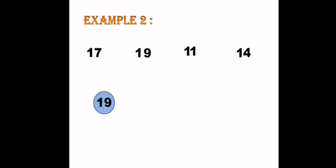Cross out nineteen. Now, compare seven to one. Seven is bigger than one. So, leave one and take seven and compare it to four. Seven is also bigger than four. So, seventeen is the biggest number now, and it will be the next number.